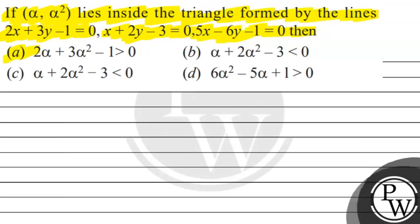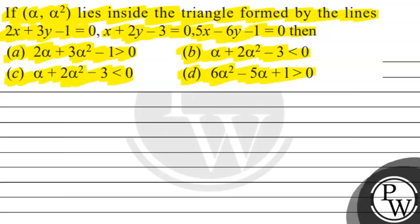Then option A: 2 alpha plus 3 alpha square minus 1 is greater than 0. Option B: alpha plus 2 alpha square minus 3 is less than 0. Option C: alpha plus 2 alpha square minus 3 is less than 0. Option D: 6 alpha square minus 5 alpha plus 1 is greater than 0.